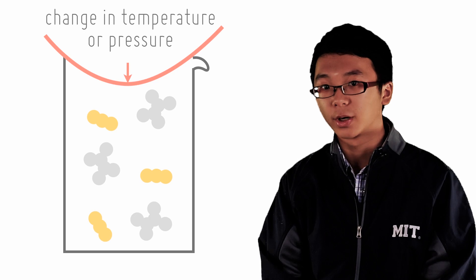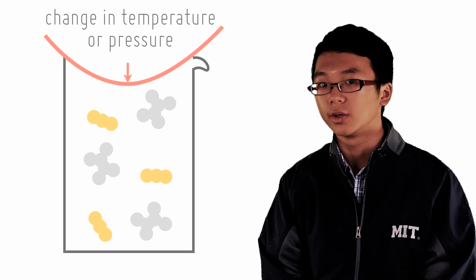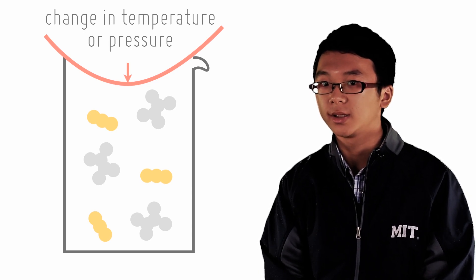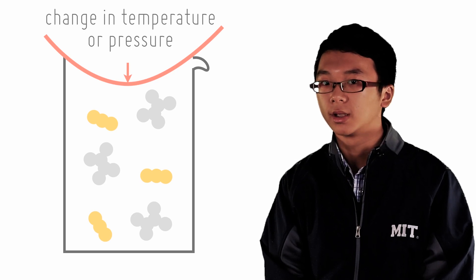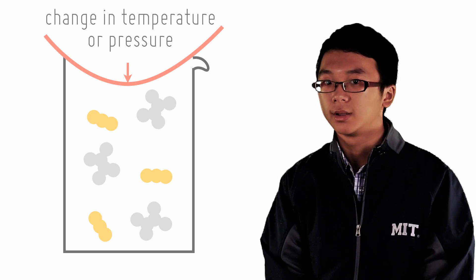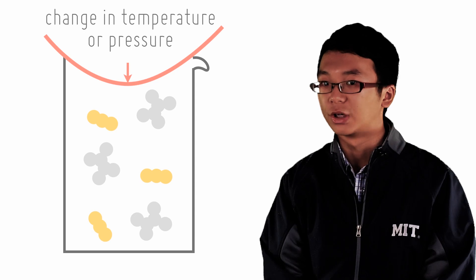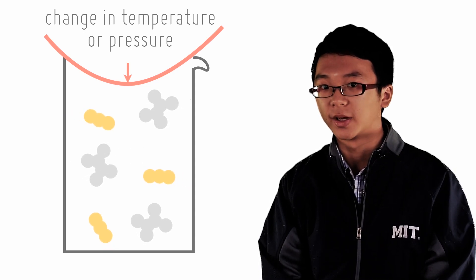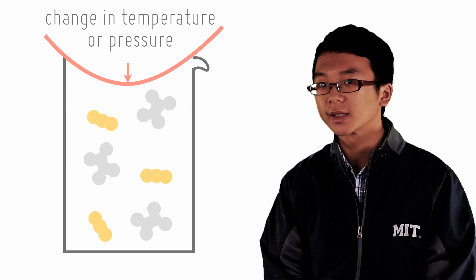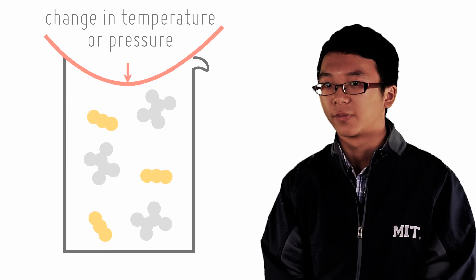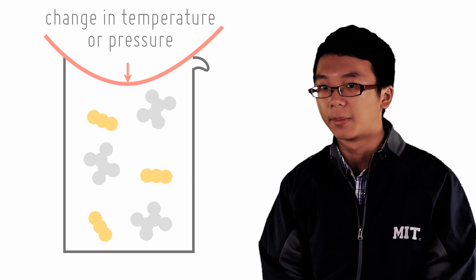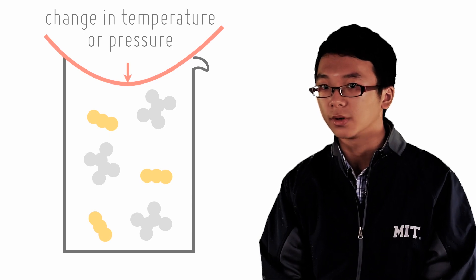So let's say, for example, the pressure of the system increases. The system will want to act in a way to counteract it and decrease the pressure of the system somehow. How can we decrease the pressure of the system? Let's recall what pressure is caused by. Random particles collide with the sides of the reaction vessel with a certain amount of force. The greater the frequency of the collisions and the greater the kinetic energy of the particles, the higher the pressure.